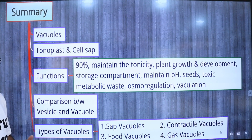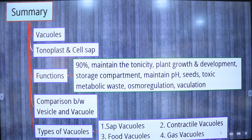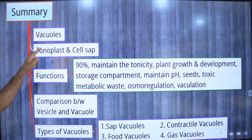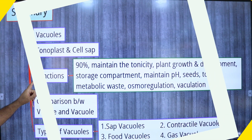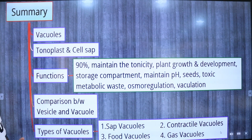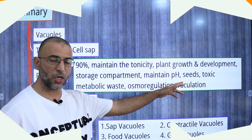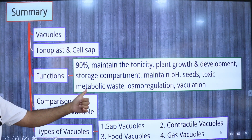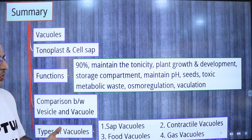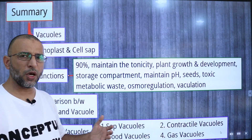To sum up: vacuoles are storage bubbles found in cells that might store food and a variety of nutrients, or store waste products to protect the rest of the cell from contamination. The tonoplast is the membrane of the vacuole, and the contents inside the tonoplast are called cell sap. Functions of vacuoles include maintaining tonicity, involvement in plant growth and development, acting as storage compartments, maintaining cytoplasm pH, storing protein in seeds, and storing toxic metabolic wastes. Through osmoregulation they maintain the water balance in the body. Vacuolation is the development or formation of vacuoles.